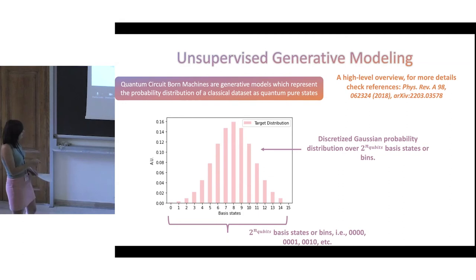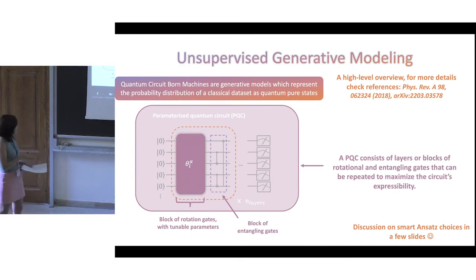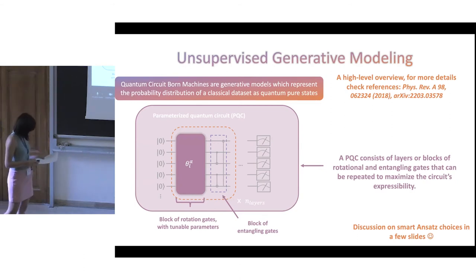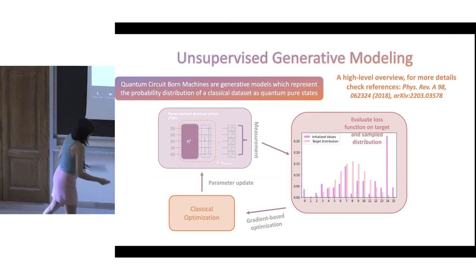To train a QCBM, you again train a parameterized quantum circuit. The structure is different from the SVM application. Your parameterized quantum circuit contains layers of rotation gates applied to single qubits and a block of entangling gates. The number of layers is associated with how expressive your circuit is. The training workflow is simple: you prepare a quantum circuit by choosing an ansatz suited for your problem — and if it doesn't work, you try another, which is what we do every day.